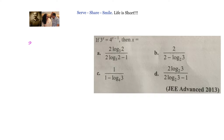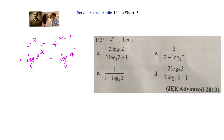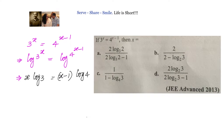Applying log on both sides, we have log of 3 power x equals log of 4 to the power of x minus 1. The exponent comes to the front, giving us x log 3 equals x minus 1 into log 4. Opening the bracket, we have x log 3 equals x log 4 minus log 4.